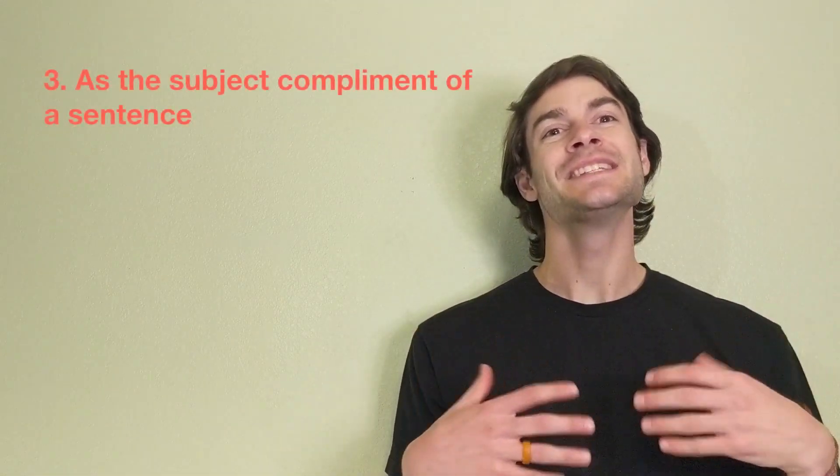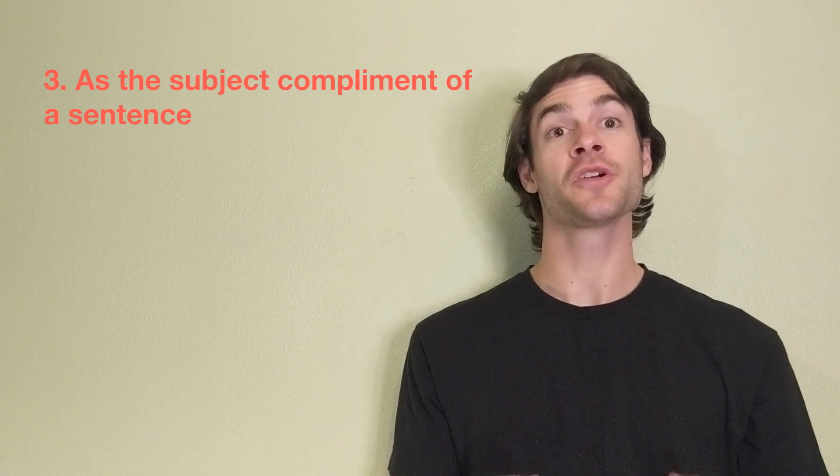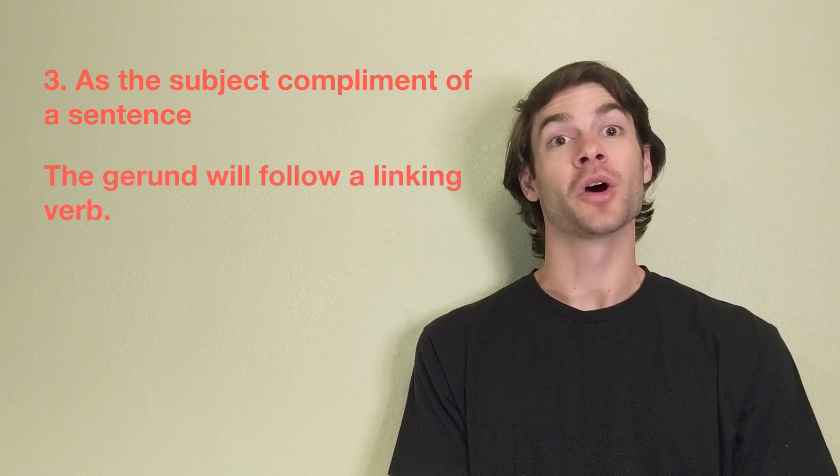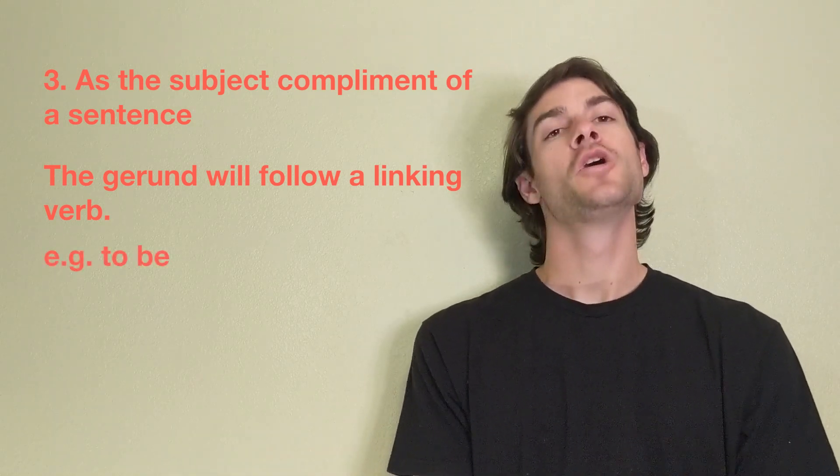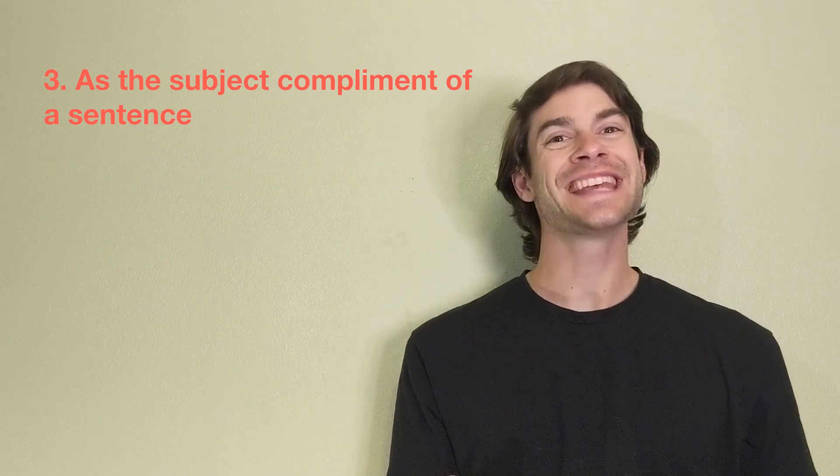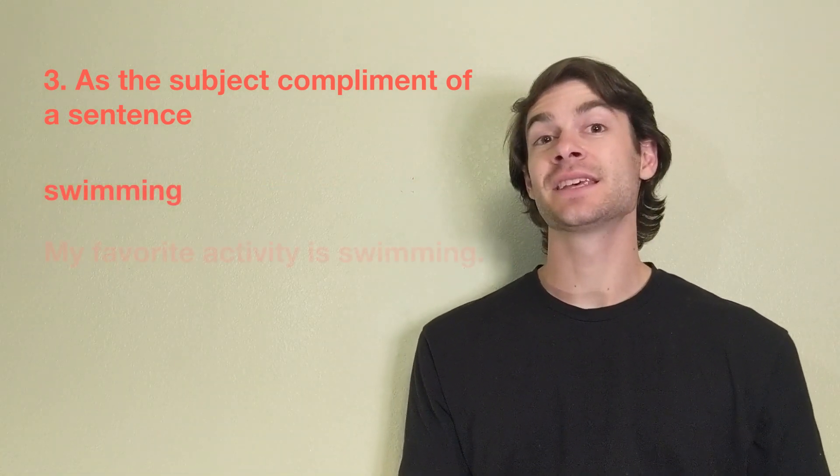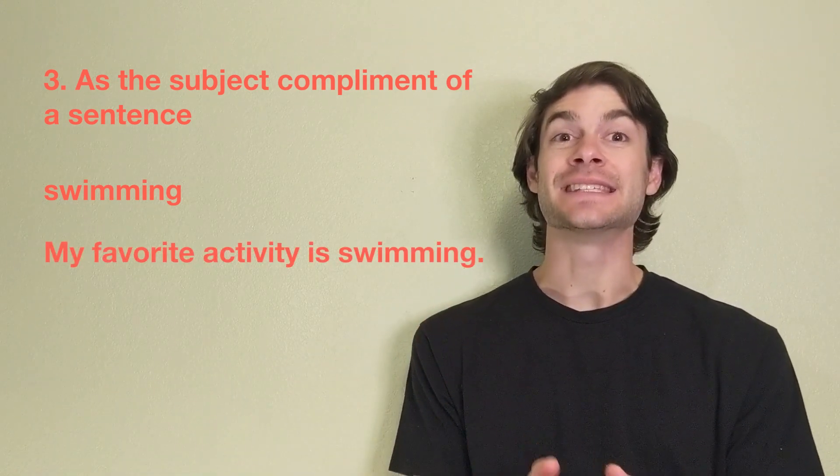When a gerund is placed as the subject complement, our third way, the gerund will follow a linking verb, such as the verb to be. For example, we can take the gerund swimming and make the sentence, my favorite activity is swimming.